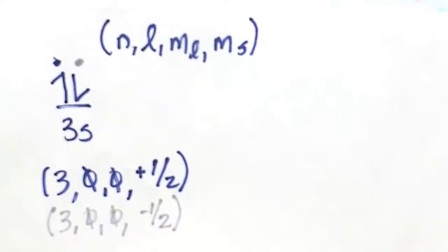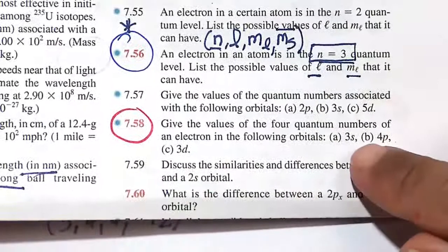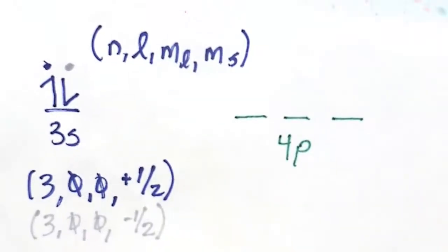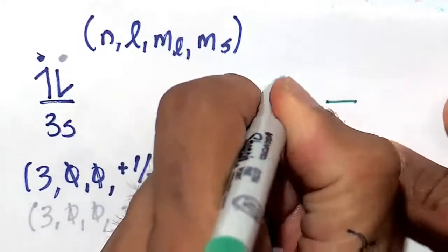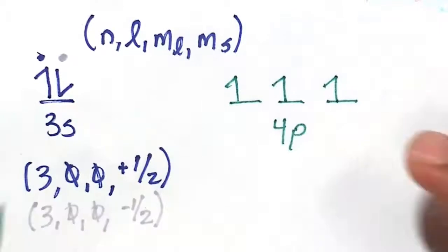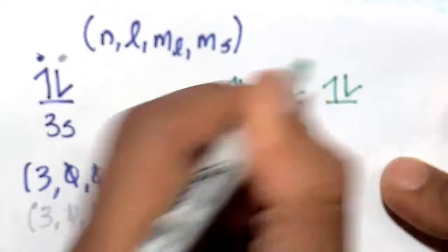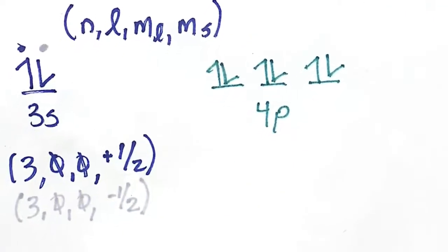Now when we go to the 4p orbital, it's a little different. The p orbital has a dumbbell shape — one along the x, one along the y, and one along the z. The way electrons go into a p orbital, unlike the s orbital, is they all first go spin up across all three slots, and then instead of going to a higher energy level, they pair up spin down. So we have six locations for these electrons.